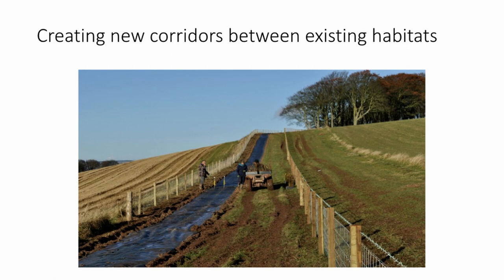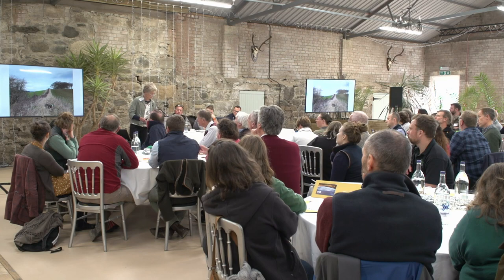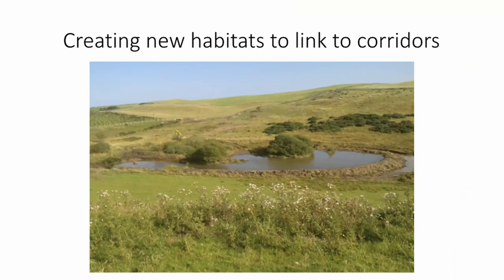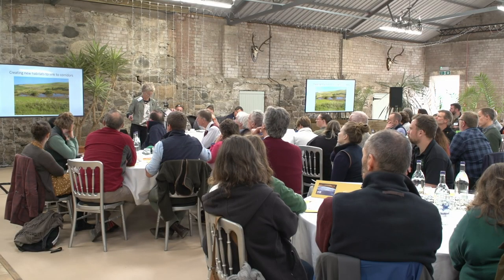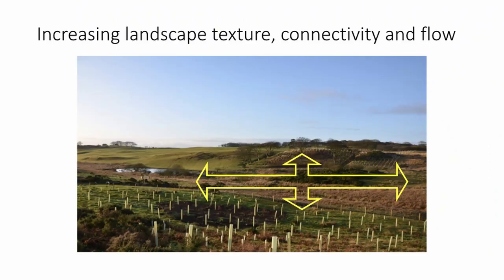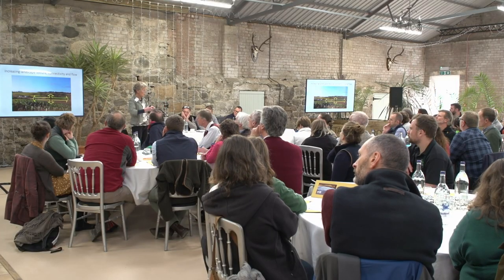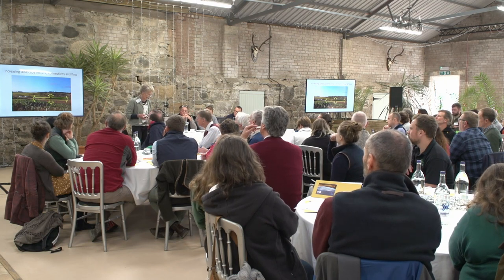Creating new corridors between existing habitats — that's a four-to-five-year difference. Creating new habitats to link to corridors, increasing landscape texture, connectivity, and flow. The central arrow is the main biodiversity hotspot on the farm, so we've basically connected that to the remainder of the farm to capitalise on existing habitat richness.